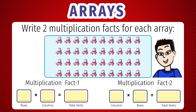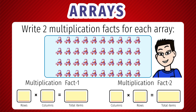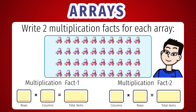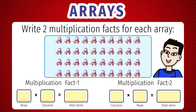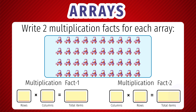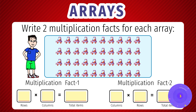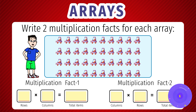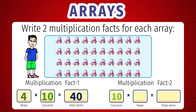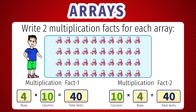With this knowledge, let us attack the next question. Can you write two multiplication facts for the array shown? 4 rows and 10 columns. The two multiplication facts are 4 into 10 equals 40, and 10 into 4 equals 40.